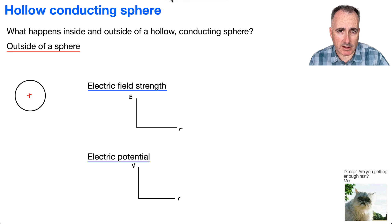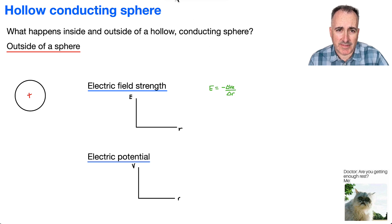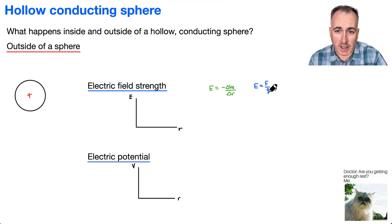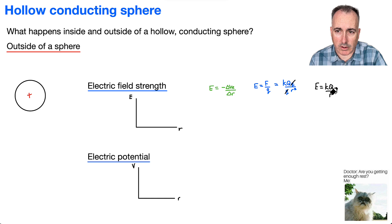Let's try to figure out what equations to use. We could try to do minus delta VE over delta R, but the problem is delta VE also contains an R — it's a little unclear. I prefer to use the simpler version, which is E equals F over Q. Remember, F is just KQQ over R squared. So dividing F by Q, the Qs cancel out, and we end up with E equals KQ over R squared.